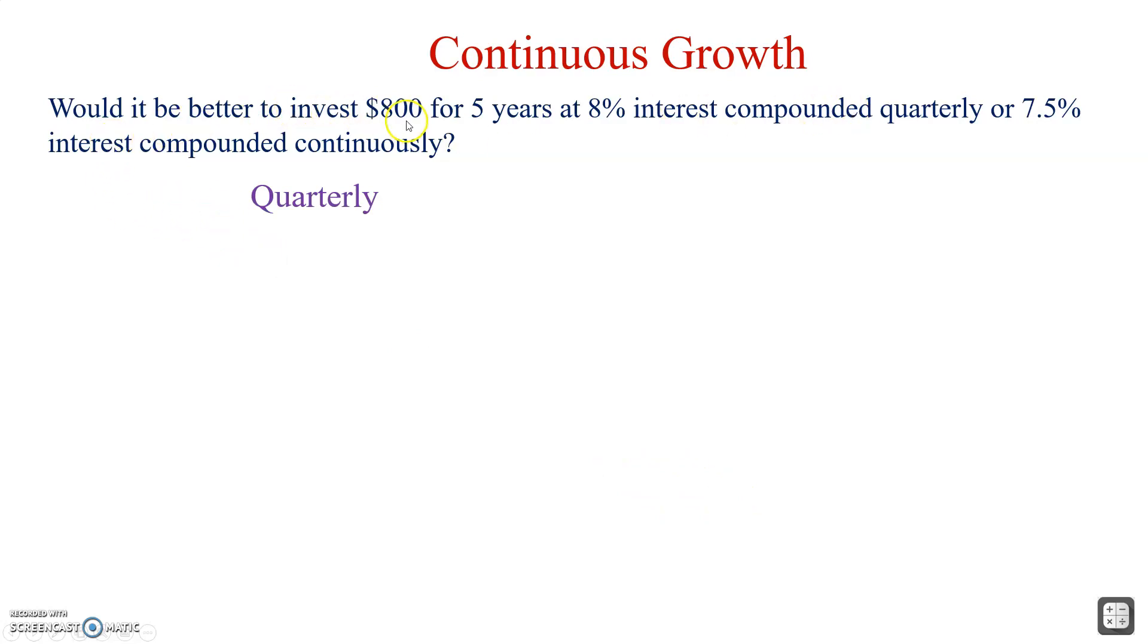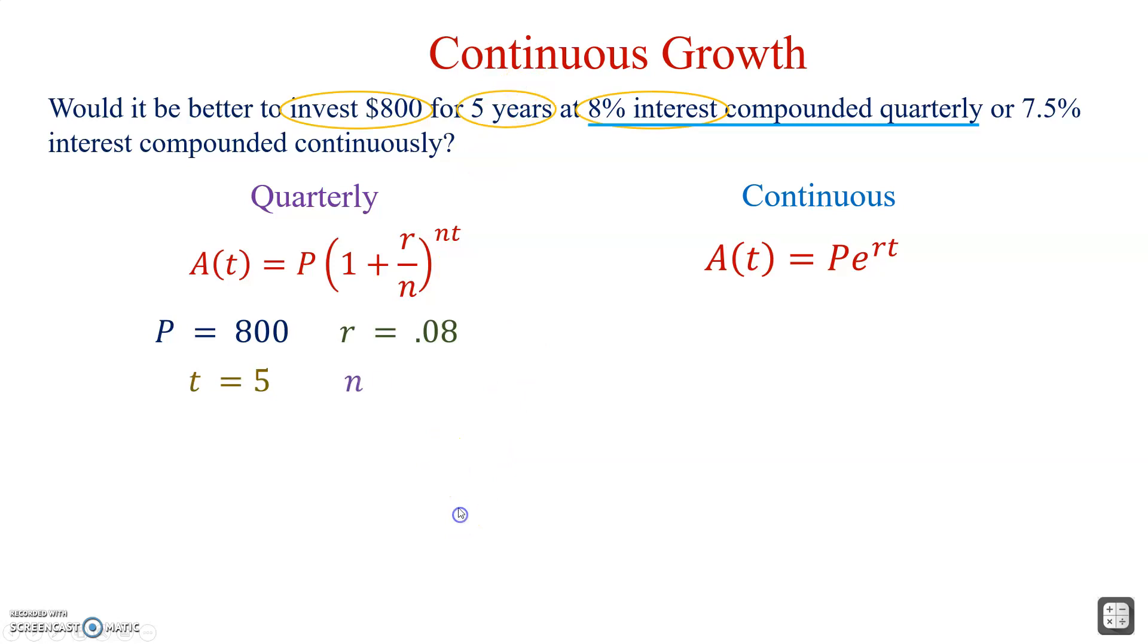We're comparing. Would it be better to invest $800 for five years at 8% compounded quarterly or 7.5% interest compounded continuously. We're going to compare two separate situations. Quarterly gives us this formula. This is our compounding interest formula. And for continuous we'll use a different formula. There's the E. Sometimes this formula is called PERT. P-E-R-T. For the 8% interest compounded quarterly, the principal is $800. P is 800. R is 0.08. T is 5, five years. And N is 4. Because it said it was compounded quarterly. We simply substitute all of this into the formula.